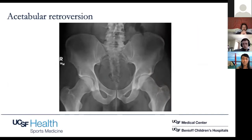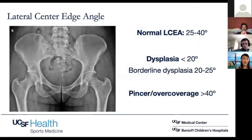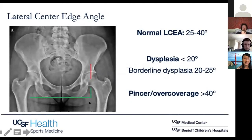A couple of measurements to take when thinking about the hip: the lateral center edge angle is normally between 25 and 40 degrees. I draw a line across the ischial tuberosities to neutralize for rotation or tilt, then a vertical line parallel to that, then a second line out to the most lateral portion of the sourcil. Dysplastic is less than 20 degrees, borderline dysplasia is the gray zone between 20 and 25, and pincer over-coverage is greater than 40 degrees.